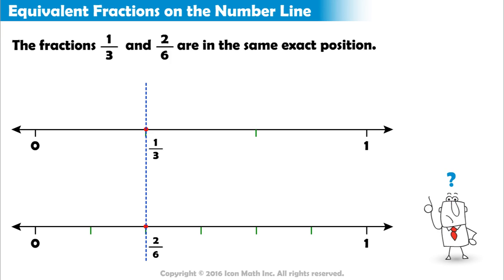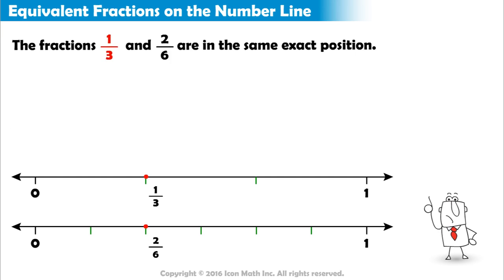What does this mean? It means that one-third and two-sixths are equal. In other words, they are equivalent fractions. Because on the number line, they are found on the exact same point.